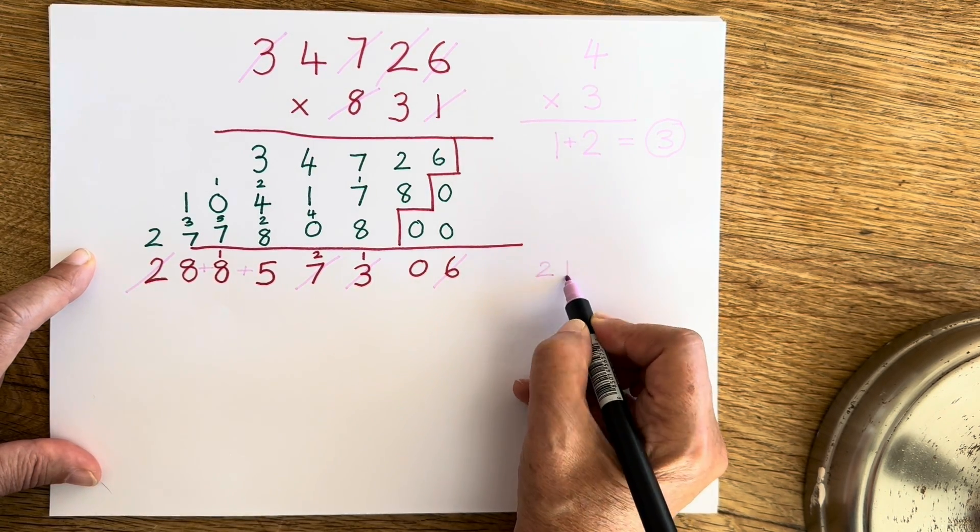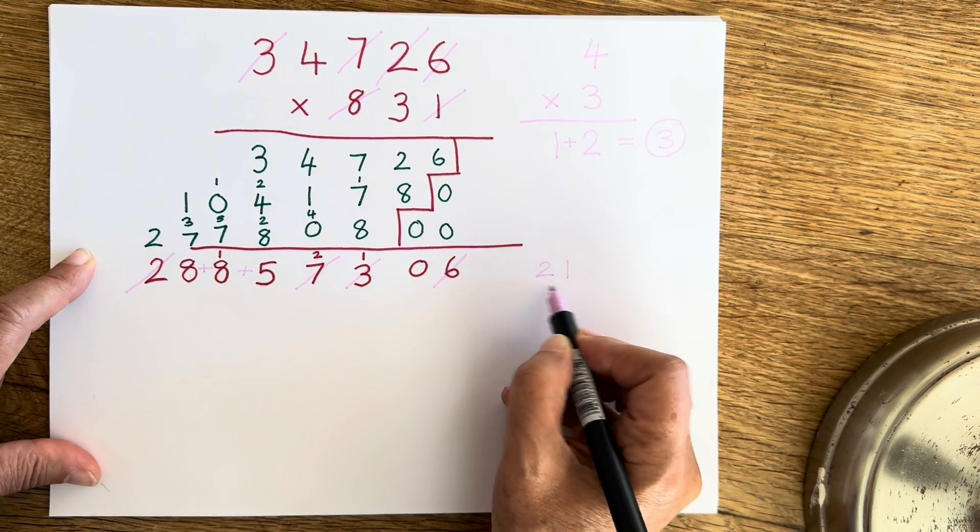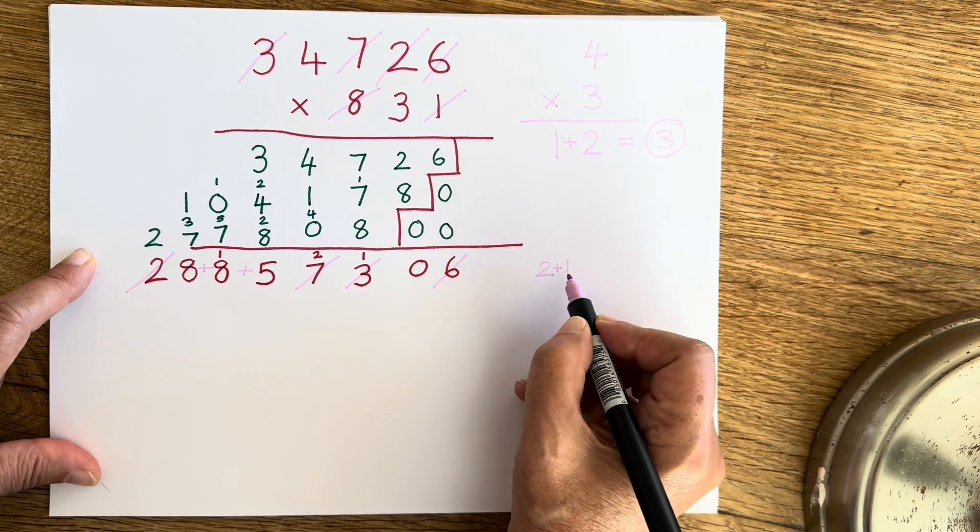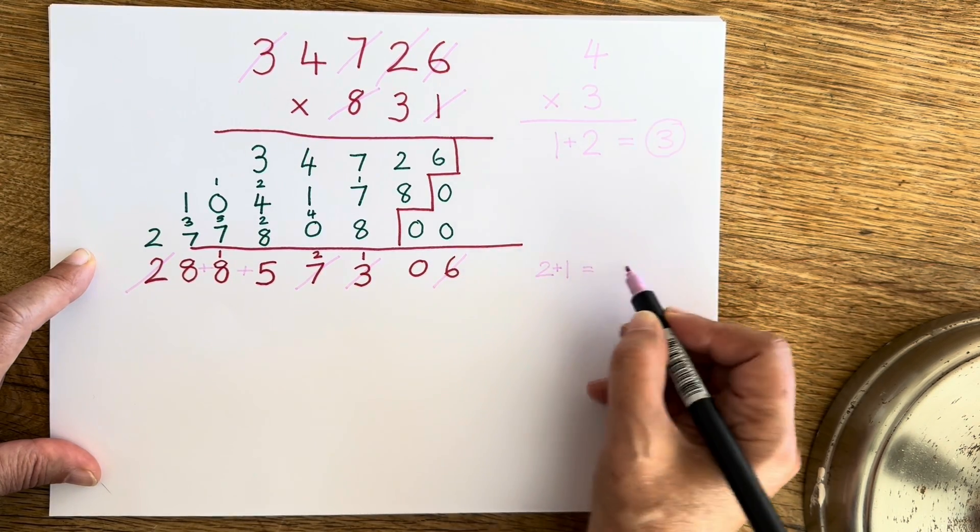But I haven't quite finished because I've still got two numbers, so once again I'm adding those together. Two plus one equals three.